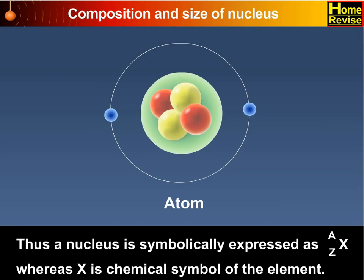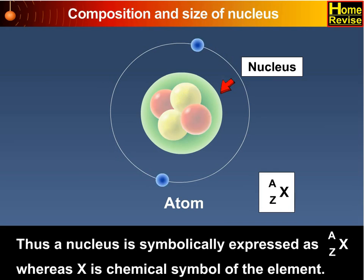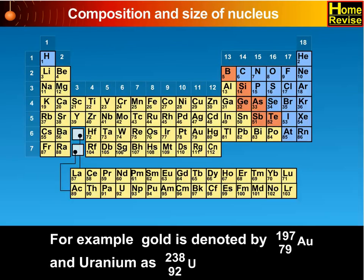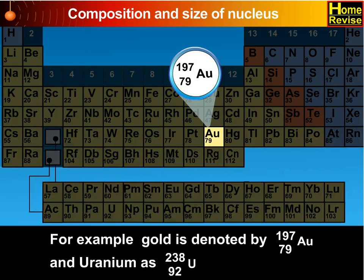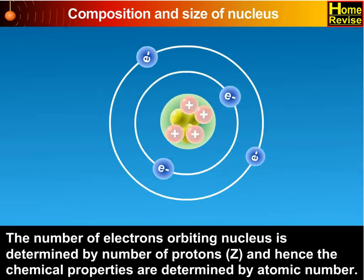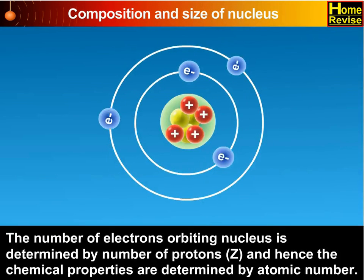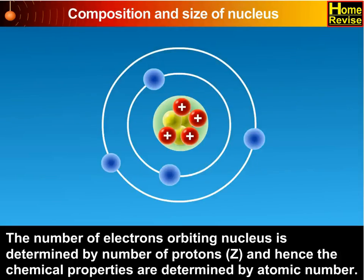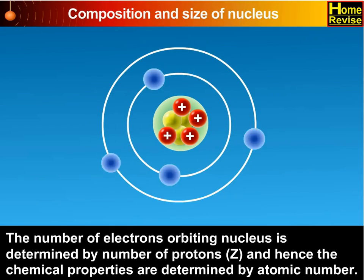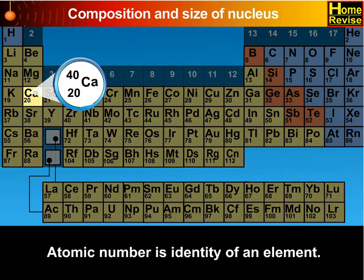A nucleus is symbolically expressed as X-A-Z, where X is the chemical symbol of the element. For example, gold is denoted by Au-197-79 and uranium as U-238-92. The number of electrons orbiting the nucleus is determined by the number of protons Z, and hence the chemical properties are determined by the atomic number. Atomic number is the identity of an element.